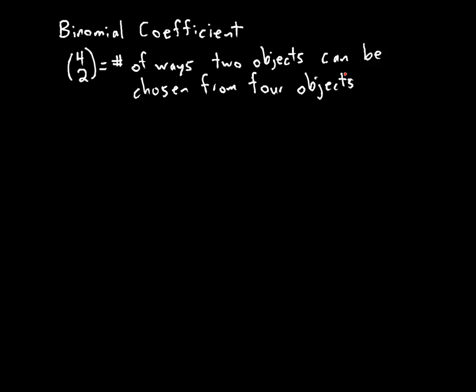On your calculator, this will probably be a combination — NCR or NCK or something of that sort. This is often a big focus in a probability and statistics course, and I have mixed feelings about that. In this course, we're not going to spend a lot of time looking at examples of binomial coefficients; instead, they'll just show up when we have the binomial distribution. But because they do show up, we need to know what they are.